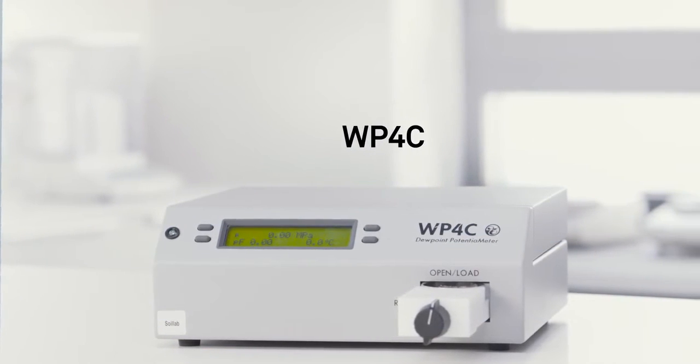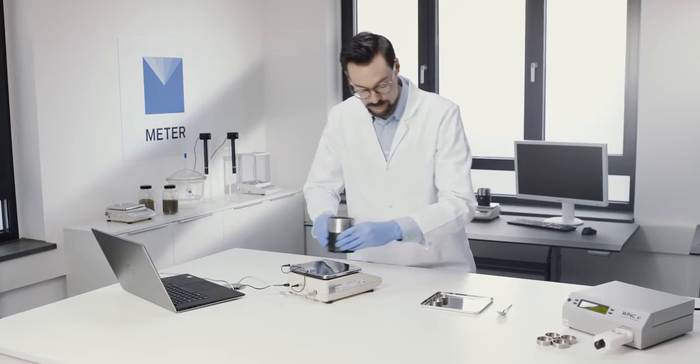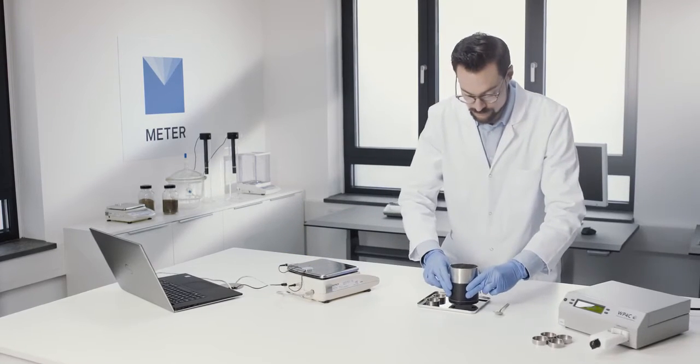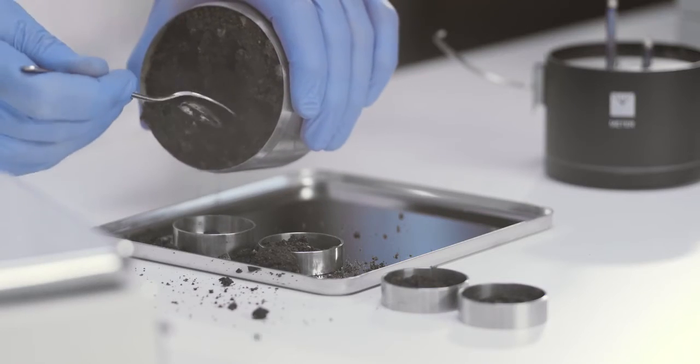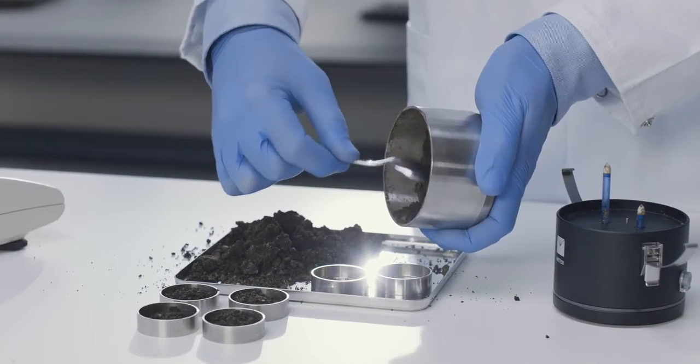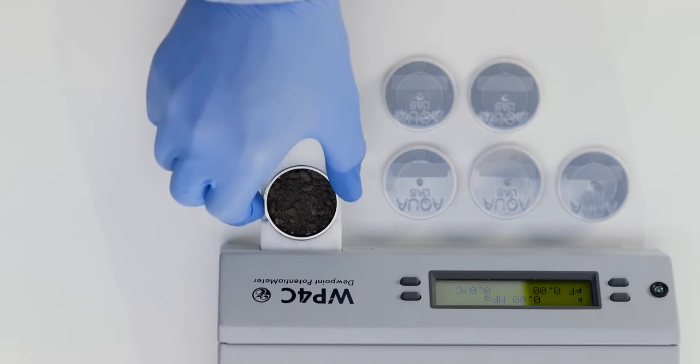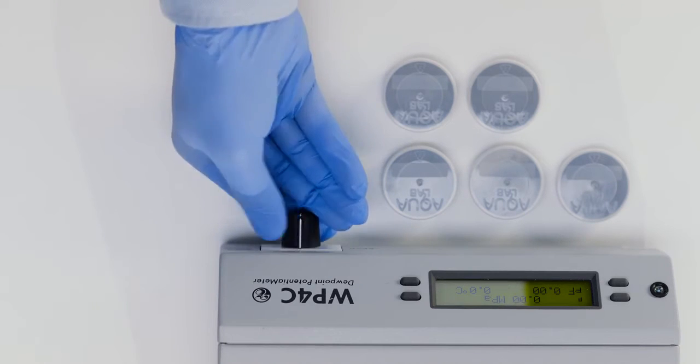Set up the WP4C. Remove the sample from the HyProp and take two samples each from the top, middle, and bottom of the soil core. Finally, measure all six samples with the WP4C to complete the dry end of the moisture release curve.